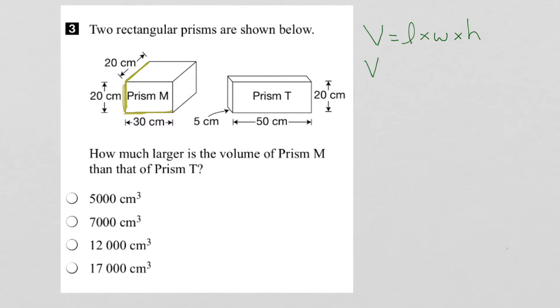So the volume of prism M, we will put these values into our equation. So the length is 30, the width is 20, and the height is 20. Now, what I haven't done yet is include the units, but we can't forget about them. The important thing here is that all the units are of the same type. So they're all measured in cm, so that's what we want.